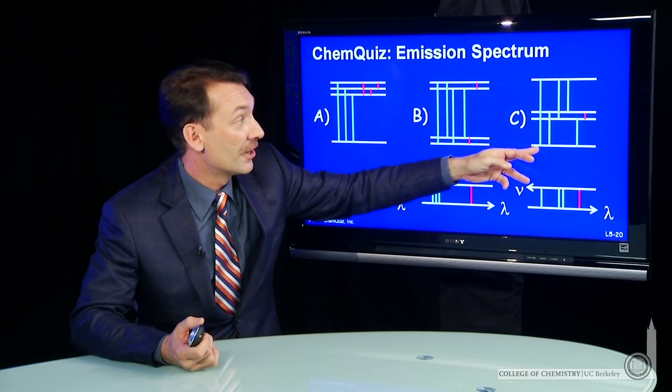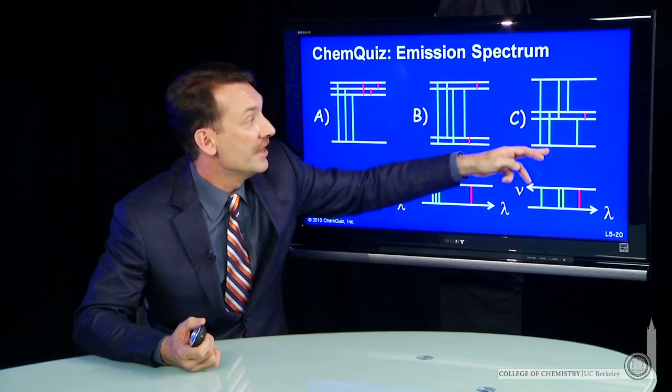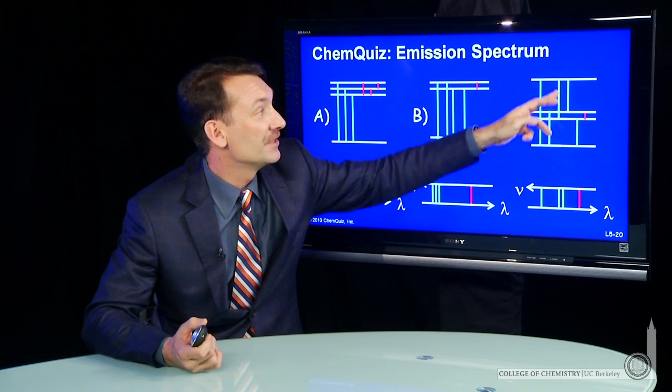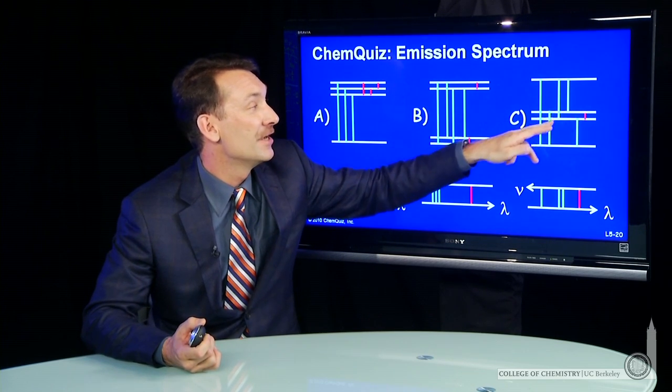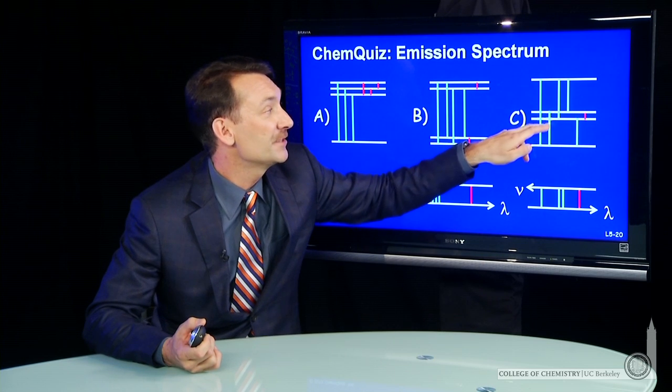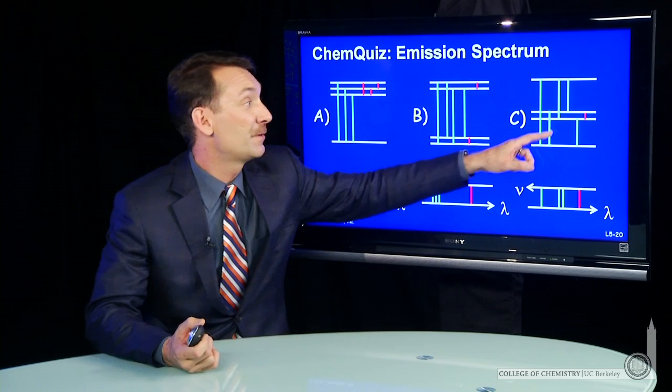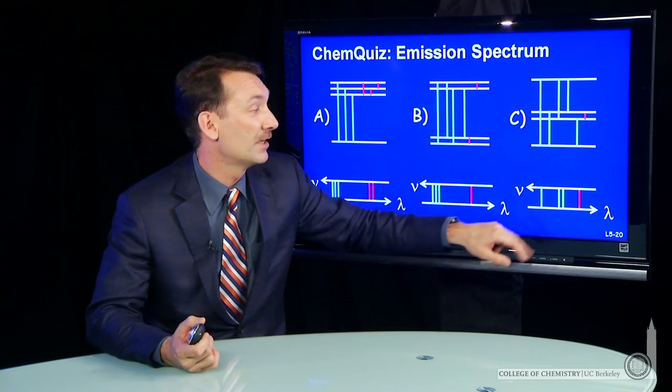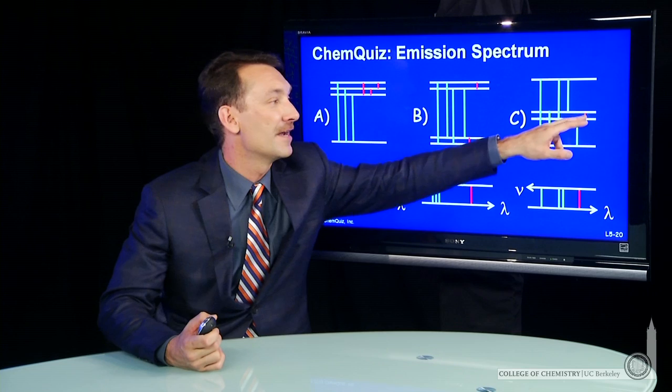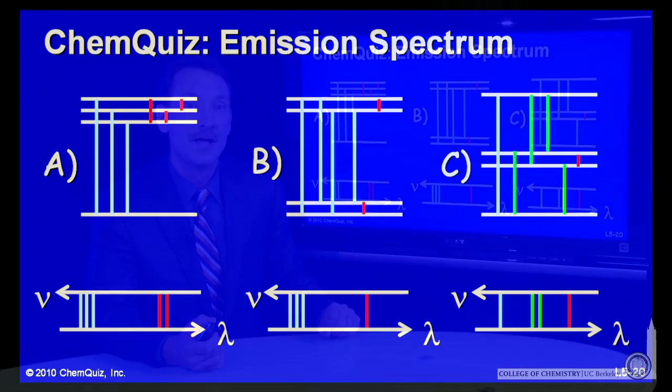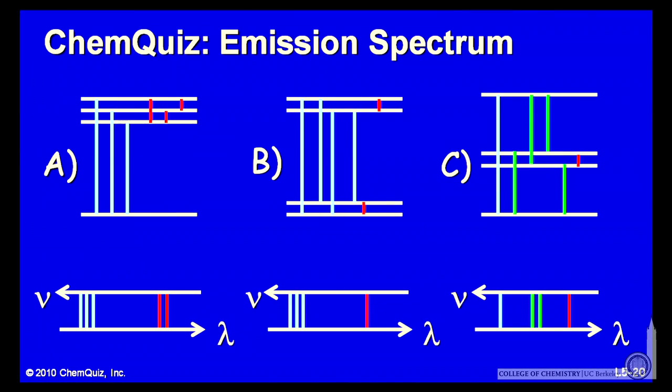You have one large energy transition, and then two energy transitions in the intermediate range, but this one, this pair, and this pair are of equal energy. So they'd give you only one line. So this pair gives you one line. This pair gives you one line, two intermediate lines, and then a small energy transition. So you see how you can analyze an energy level diagram and go to a spectrum and kind of backwards and forwards.